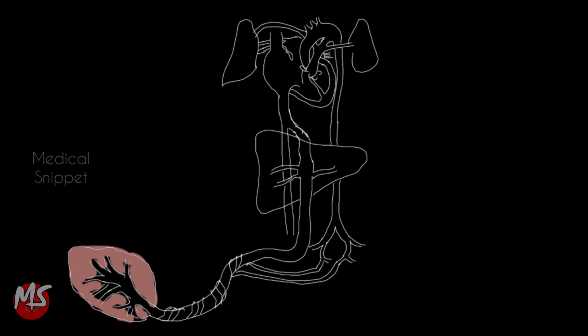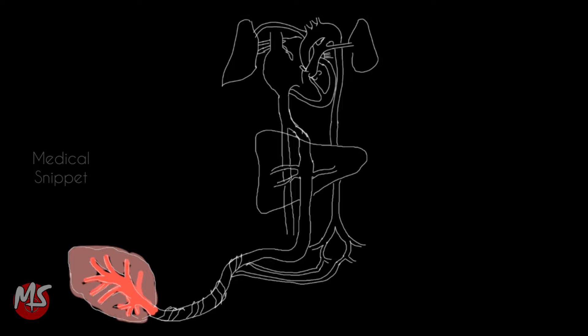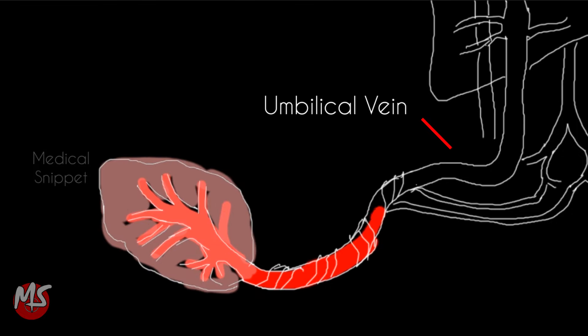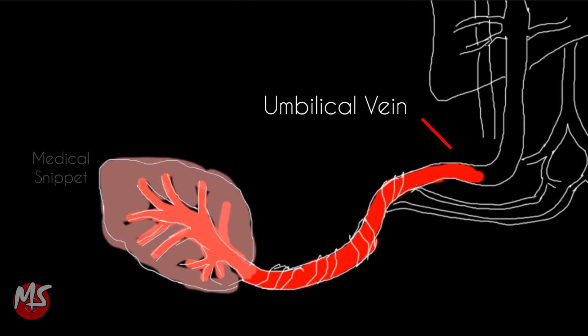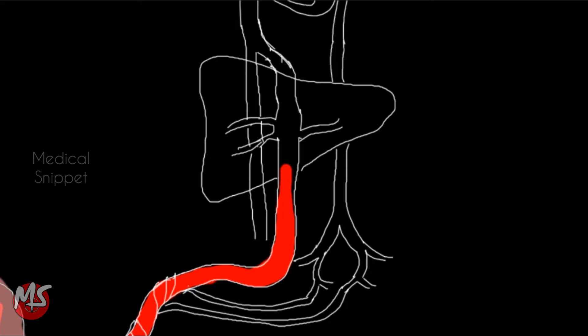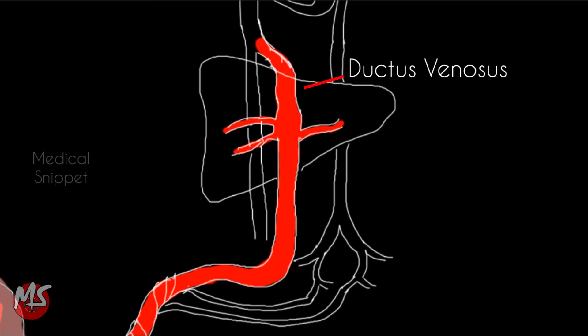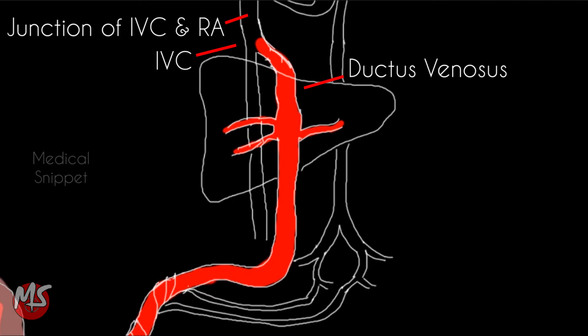The fetal blood is oxygenated in the placenta and is returned to the fetus via the umbilical vein. The richly oxygenated blood in the umbilical vein divides as it enters the liver, being distributed equally between the ductus venosus and the liver parenchyma. The ductus venosus is a direct shunt that allows blood from the umbilical vein to enter the inferior vena cava near its junction with the right atrium.